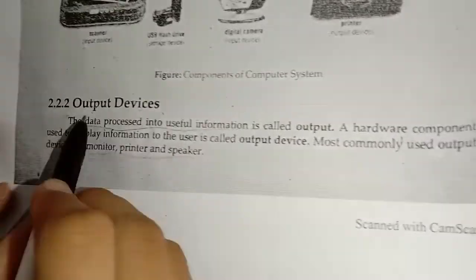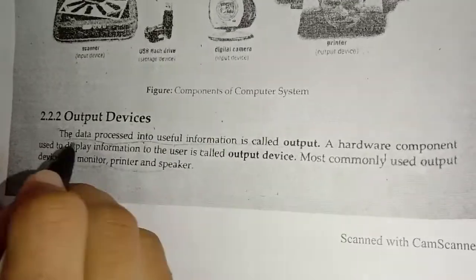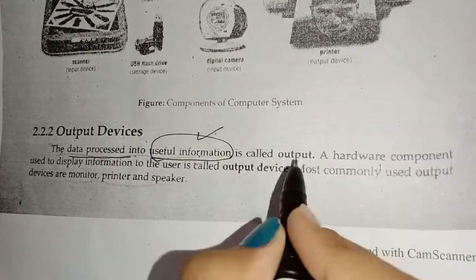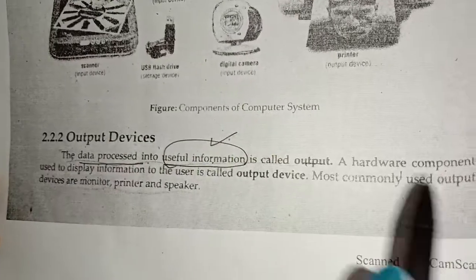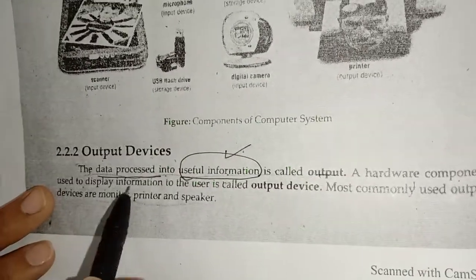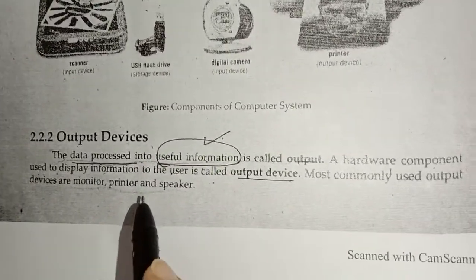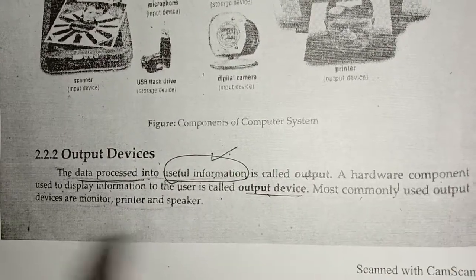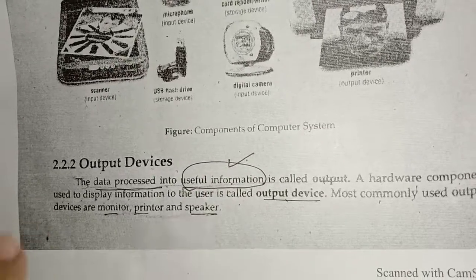What is an output device? Data processed into useful information is displayed using an output device. The hardware component used to display information to the user is called an output device. Examples of output devices include monitor, printer, and speaker.